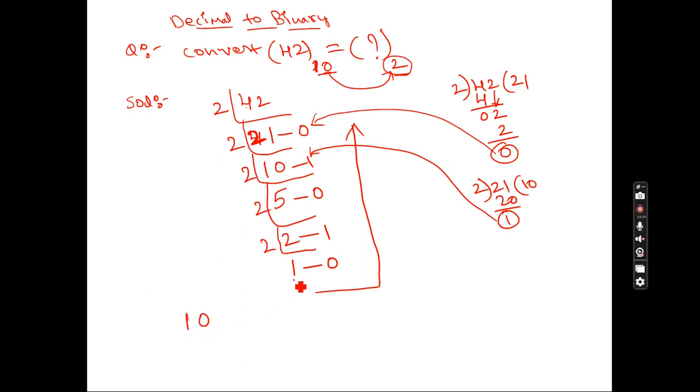This is 1, 0, 1, 0, 1, 0. So 42 in decimal is equal to 101010 in binary. So what do we understand? Whatever decimal number you have to give, what do we need to do? Divide by 2 using LCM method.